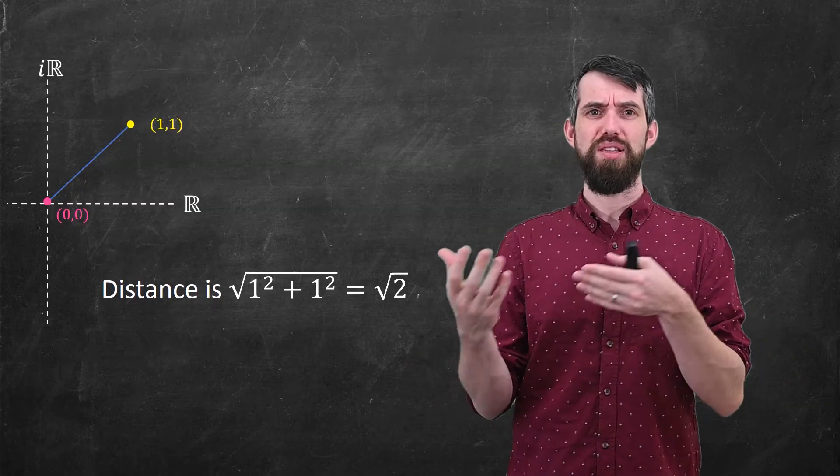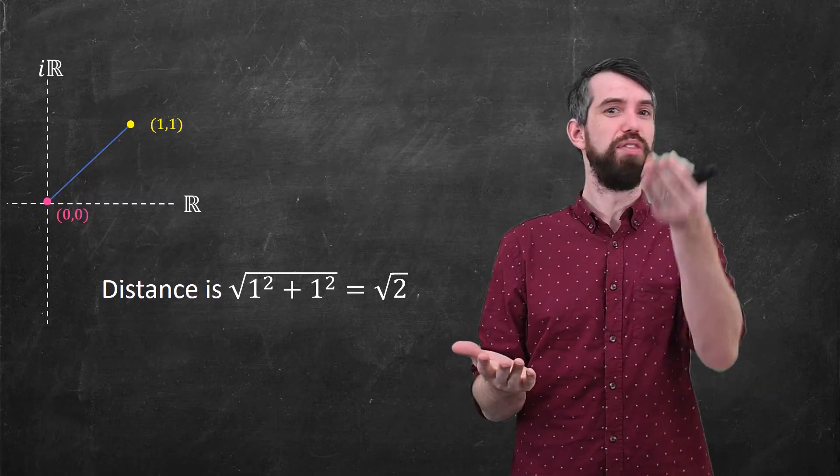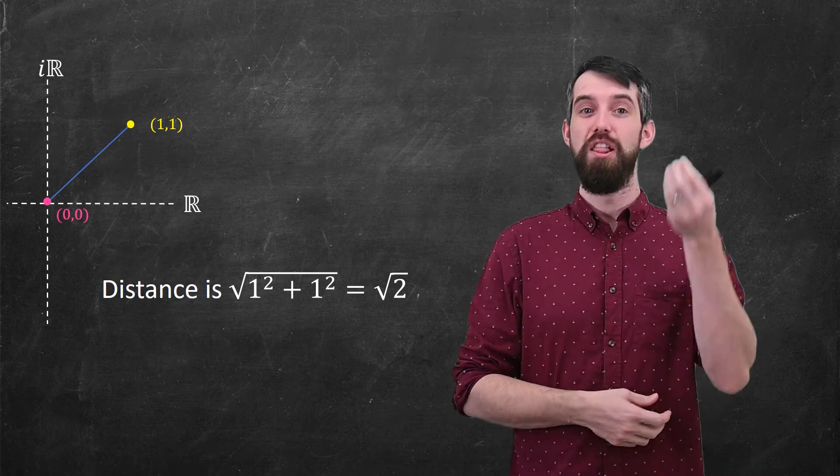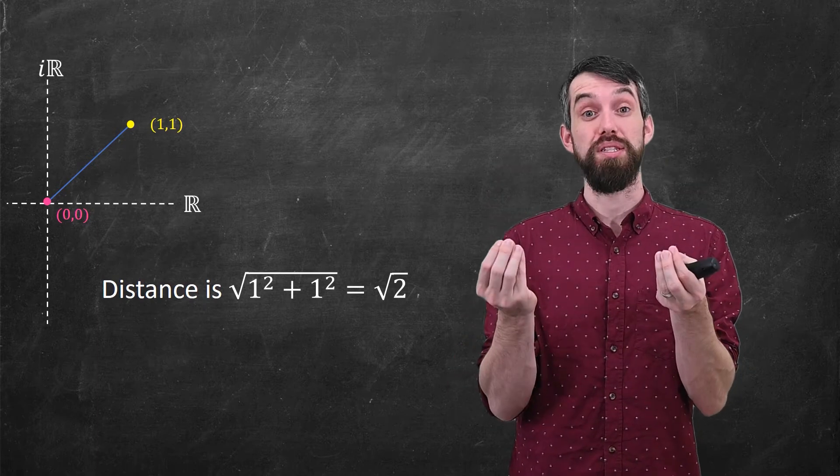If it turns out that your singular points are real numbers, then you don't have to worry about any of this nonsense, and you can just go and take the normal straight line distance between the point that you have and the singular points nearby it.